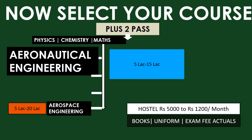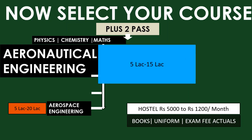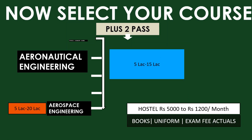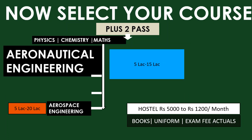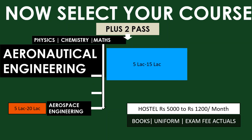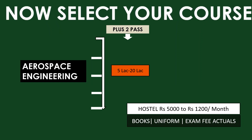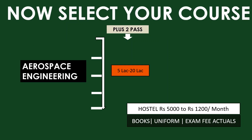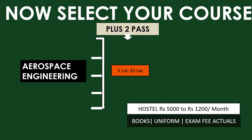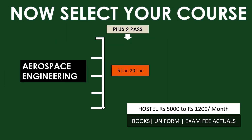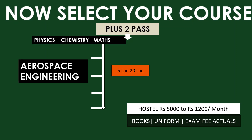Next is Aeronautical Engineering. After passing your Plus 2 with physics, chemistry and maths, you can choose Aeronautical Engineering. The fees will be around 5 lakh to 15 lakh for 4 years. Next is Aerospace Engineering. After passing your Plus 2 with physics, chemistry and maths, you can choose Aerospace Engineering. The fees will be around 5 lakh to 20 lakh for 4 years.